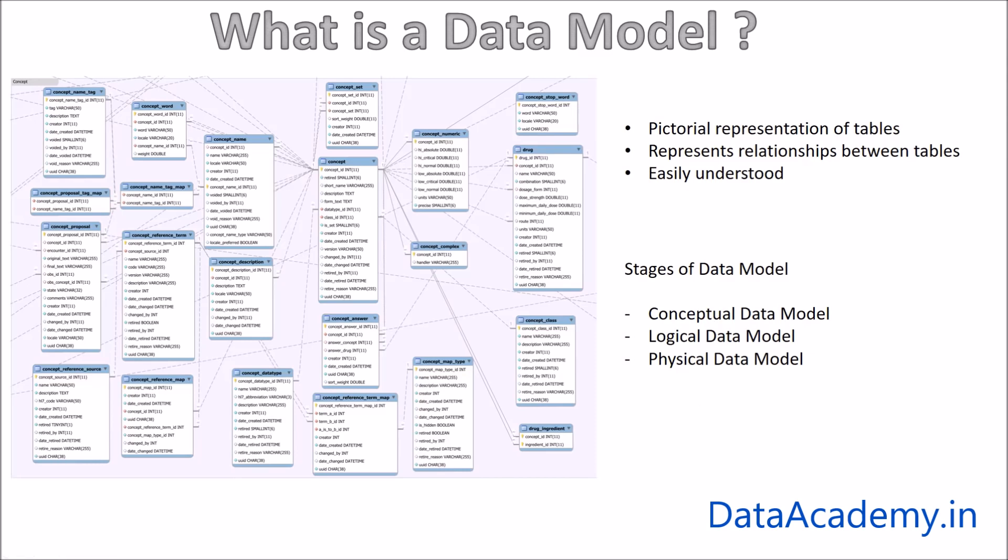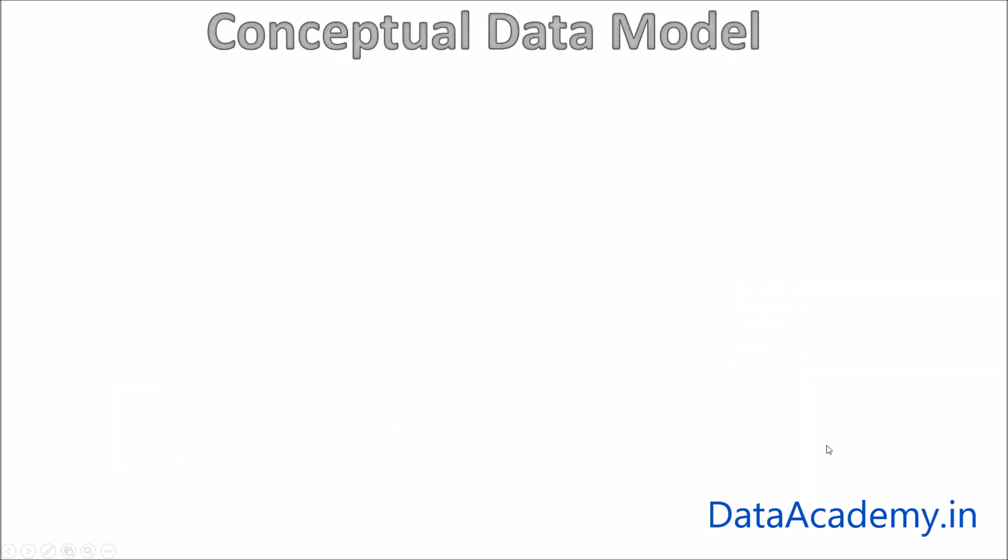Now let's look at the first stage, which is a conceptual data model. A conceptual data model is just a set of square shapes connected by a line. The square shape represents an entity and the line represents a relationship between the entities.